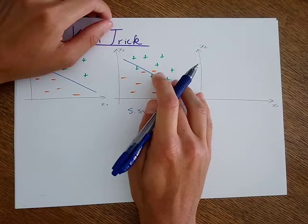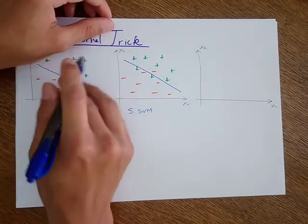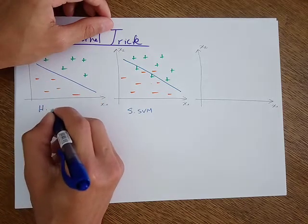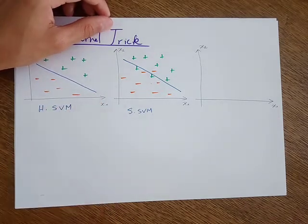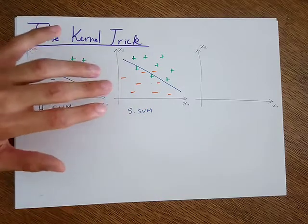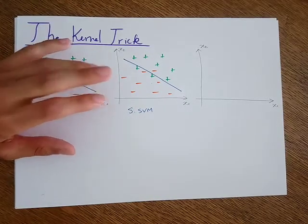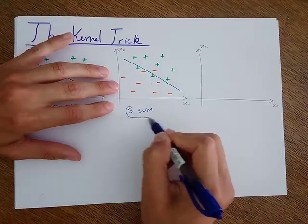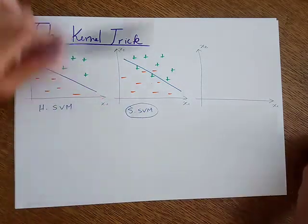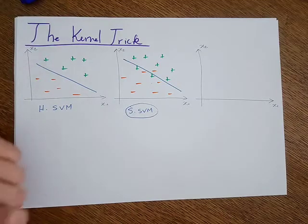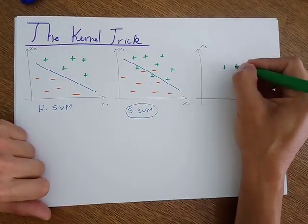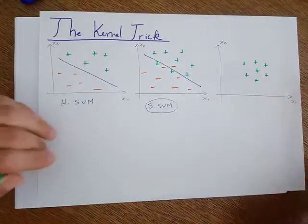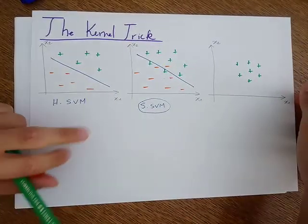The soft SVM would allow me to create this kind of boundary. And when the data is perfectly linearly separable, we are talking about the hard support vector machine. However, there is a case where the data is not linearly separable and we cannot use the soft support vector machine. For example, this is a type where the data is linearly not separable and the use of the soft version is not a good idea.